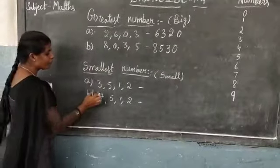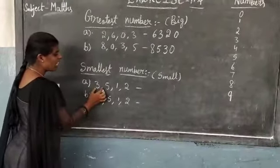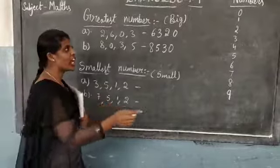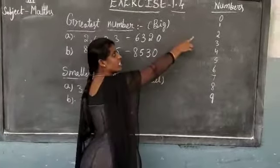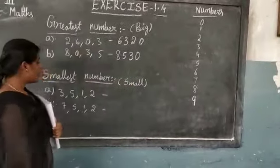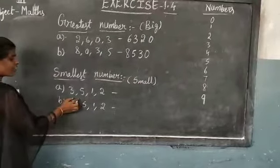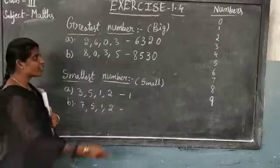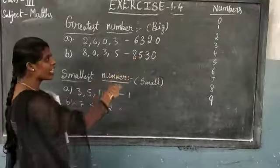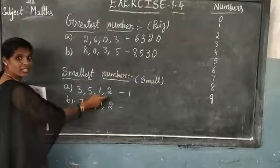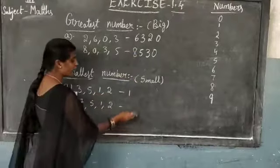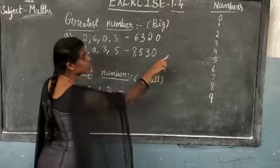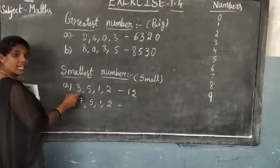Same smallest number also, once you see each other. Smallest means small number. First you will start with 0, children. 0 after 1 — then here, 1 is there, then write 1. 1 after 2 — is 2 there? No children, here — 2 is there, yes. You write 2. 2 after 3 — is 3 there? 3 is there.